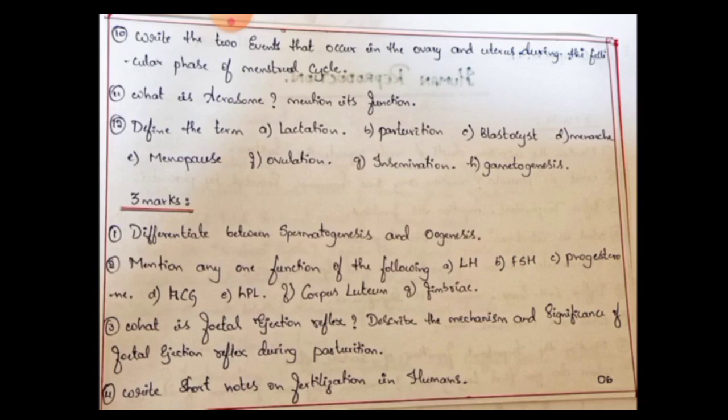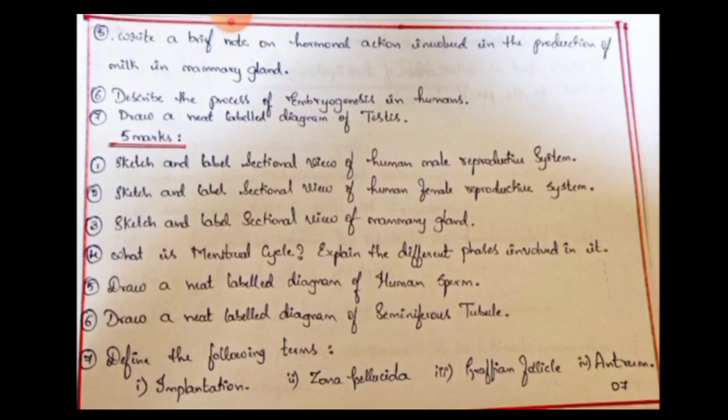Most expected 3-mark question: What is the fetal ejection reflex? Describe the mechanism and significance of the fetal ejection reflex during parturition — this includes the definition, hormone release, and mechanism for full three marks. Next: Write short notes on fertilization in human beings — fertilization involves a number of processes; this is expected. Next: Write a brief note on hormonal action involved in the production of milk in the mammary gland — this is a flowchart question.